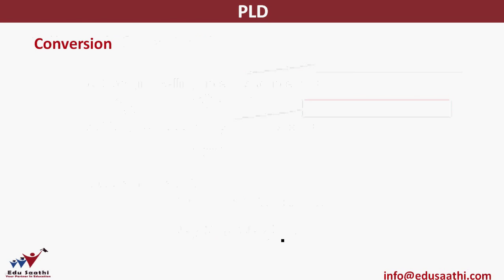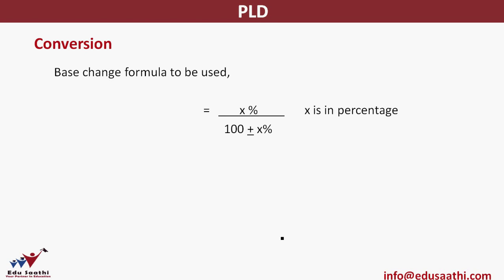In case of loss, cost price is more, so loss percentage would be lesser than loss margin. It is very important to understand how to convert one into another. If I have the value in profit percentage I can convert it into profit margin, and vice versa. The concept is change of base — the original base was CP and the new base will be SP. The base change formula is x percent over (100 plus or minus x). When the value is in fraction, the 100 is written as 1.